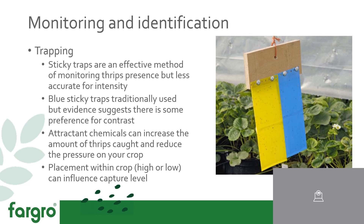Depending on the thrips species and crop type, placing traps within the foliage, above the foliage, or below the foliage can make a difference. You can even place traps horizontally below the foliage to catch pupae, which will fall once they enter that stage, giving you a better idea of the life stage the thrips are at.